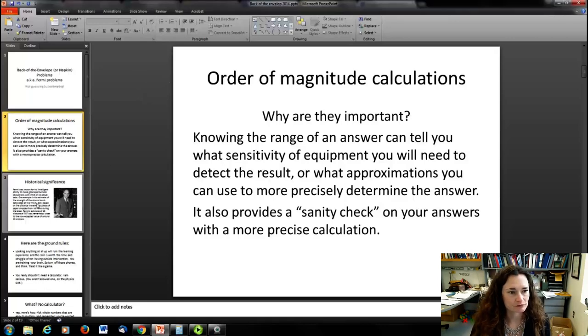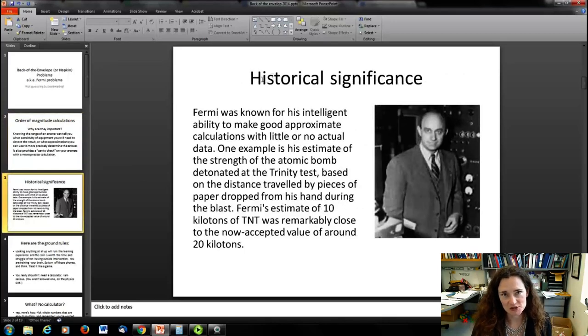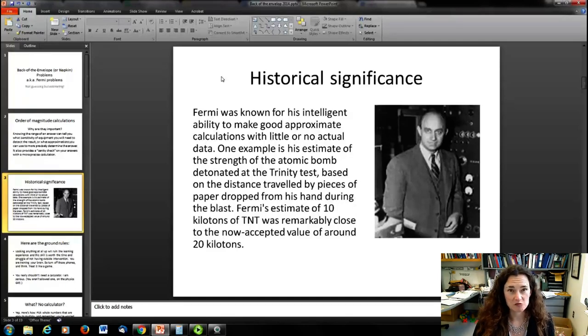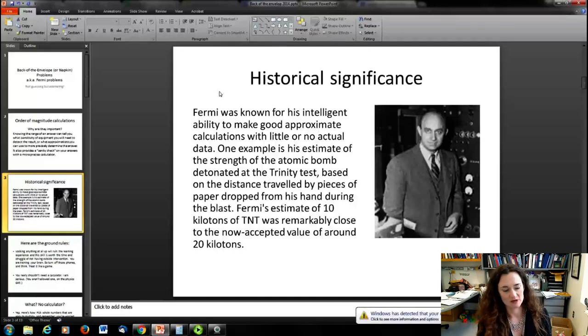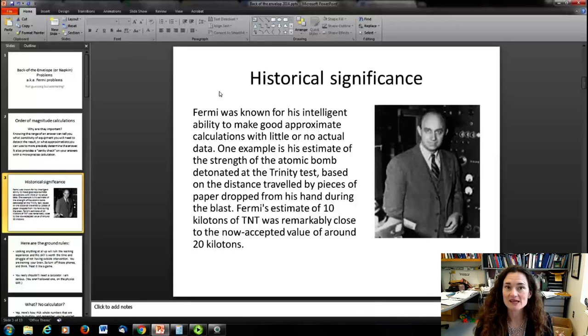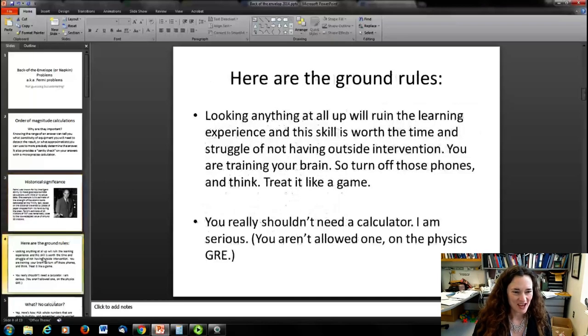Enrico Fermi is the physicist who made these kinds of calculations popular. He worked on important projects regarding the Manhattan Project and the building of the atomic bomb. One of the most famous back-of-the-envelope calculations he did was to estimate the strength of the atomic bomb detonated at the Trinity test. He dropped some pieces of paper and let them fall while the explosion was going on, then measured how much they deflected. He basically estimated the blowback. He estimated 10 kilotons of TNT, and it turned out the true answer was 20 kilotons, so he was pretty good at these calculations.